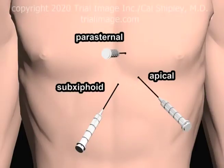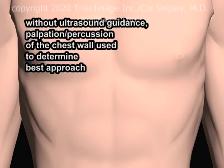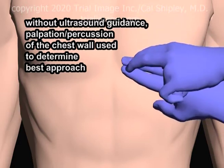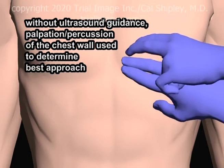So how does one choose which of these three approaches to use during emergent pericardiocentesis? Prior to the era of real-time ultrasound guidance, pericardiocentesis was performed blindly, using palpation and percussion of the chest wall in an attempt to determine where the pericardial effusion was deepest, and hence which approach to use. This technique may still be used to determine the best approach in situations where real-time ultrasound guidance is unavailable.